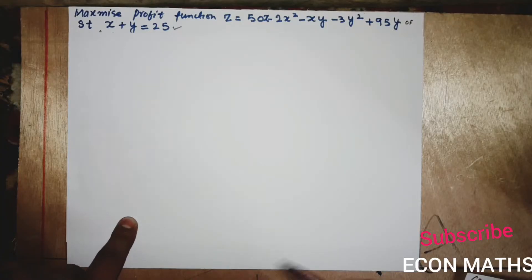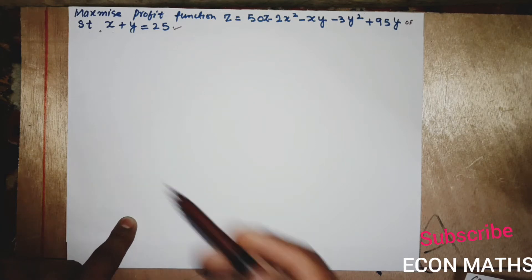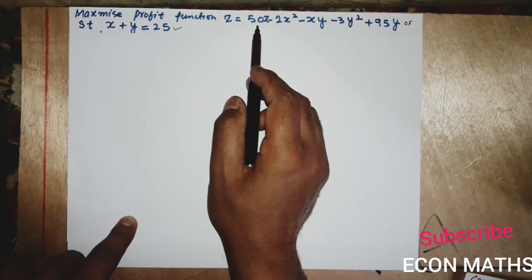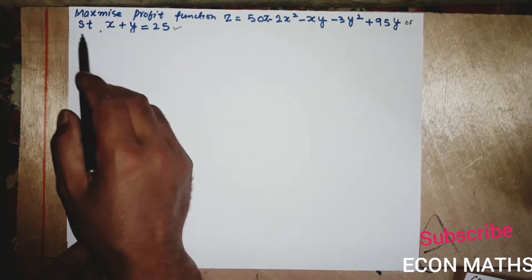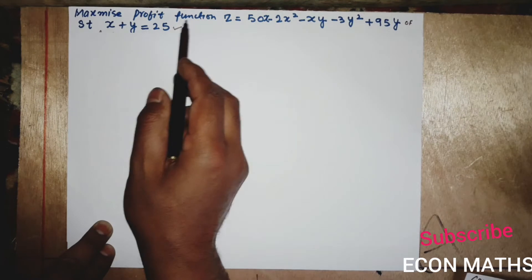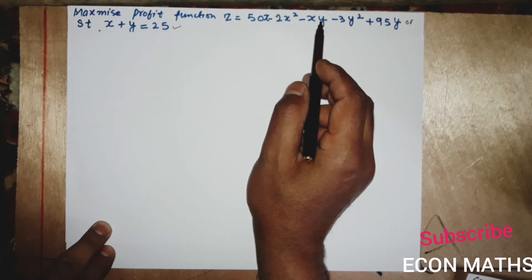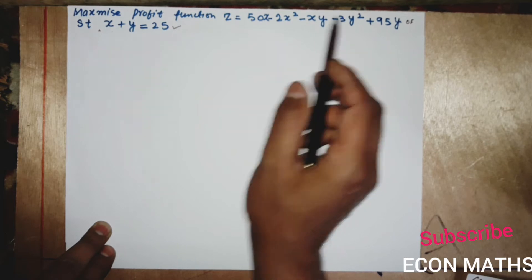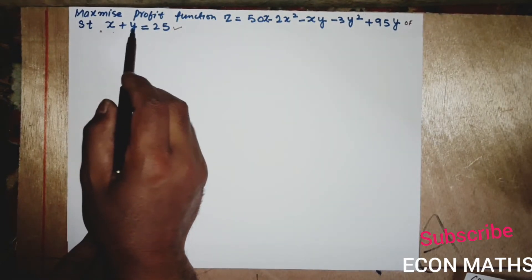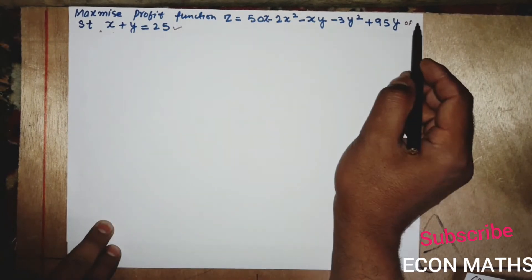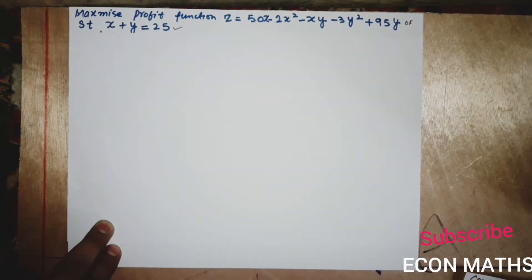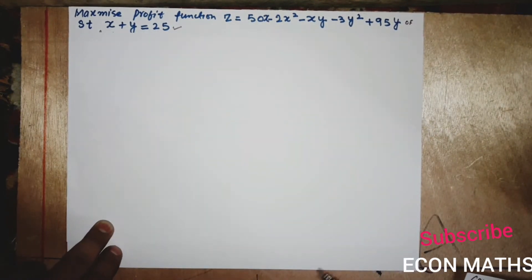Hi, this is Halal. In this video we will solve a numerical on constrained optimization with Lagrange's multiplier. The question is: maximize the profit function z = 50x - 2x² - xy - 3y² + 95y, subject to x + y = 25. Here x and y are the quantities of good x and y, and the constraint means the sum of the two goods must equal 25. This is our objective function and this is our constraint.